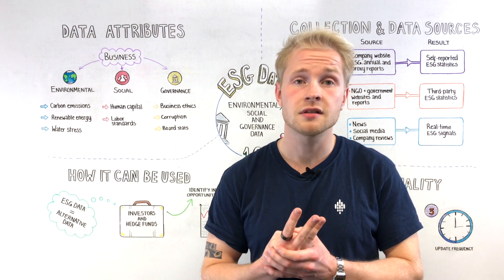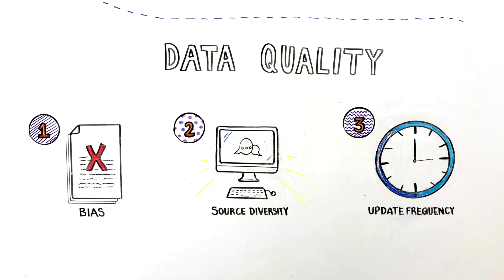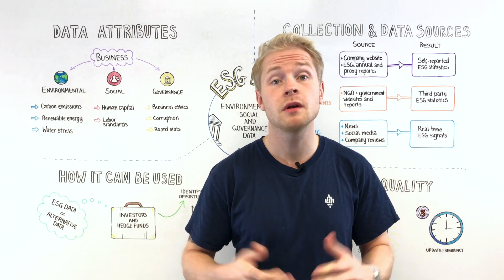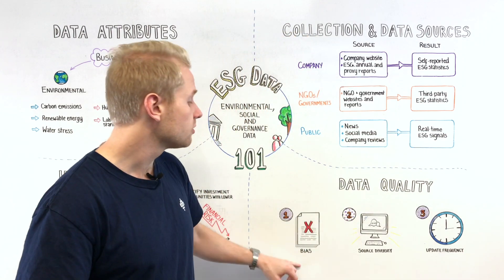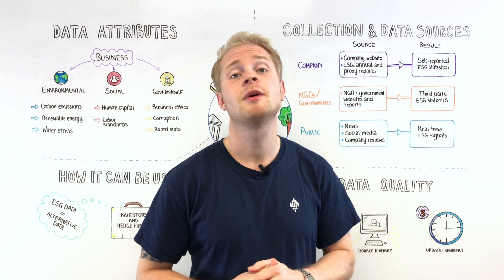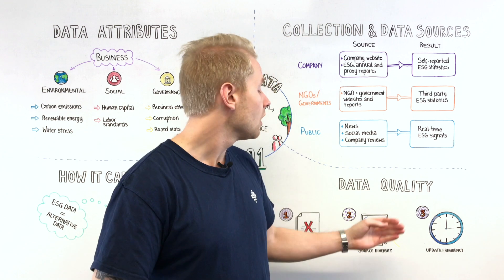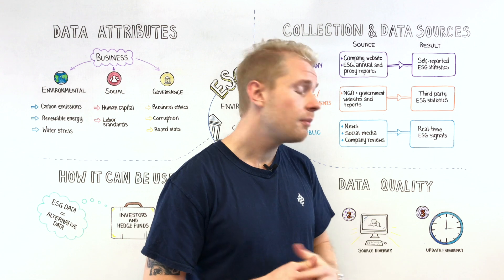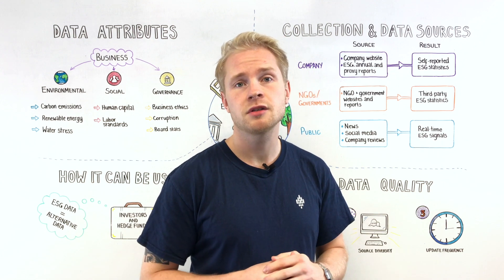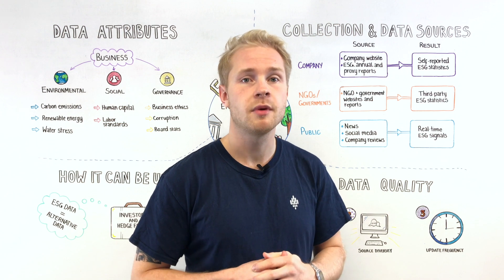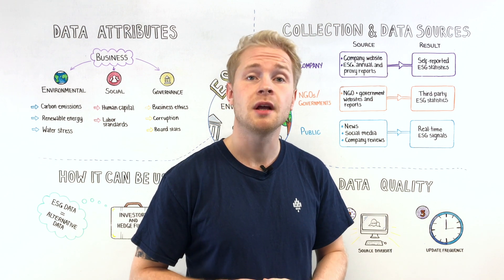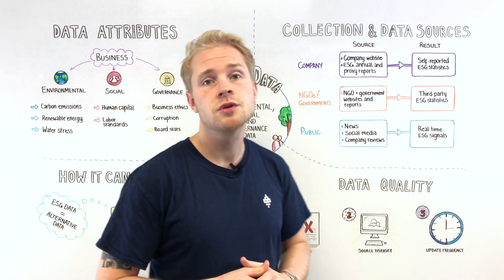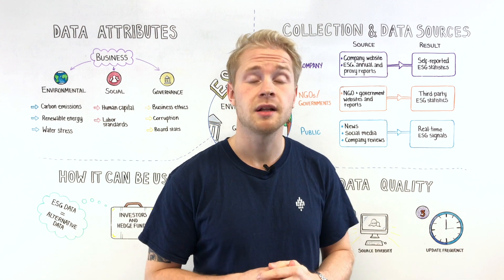There are three major things about data quality with ESG. As long as the information is collected directly from the companies themselves, they will have their own agendas and occasionally this might lead to some sort of bias. You can try to minimize that bias by making sure that your data provider is using a larger variety of different sources for their raw data. Third, update frequency: if your data provider is only using annual reports as their main source, you will get updates once a year. If they use other sources like financial news or social media, you can get updates at least on a daily basis.